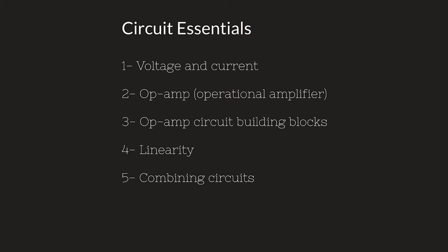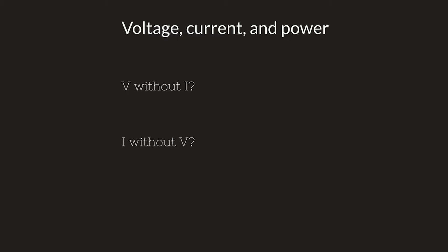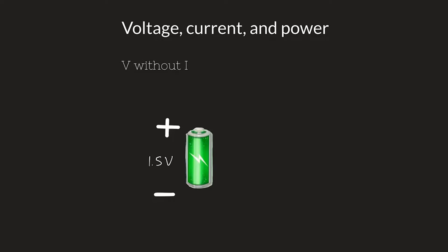First, you have to understand: how can you have a voltage without a current, and how can you have a current without a voltage? Understanding these two things helps clarify the difference between voltage and current. Having a voltage without a current comes into play significantly in op amp functionality. One example: a battery has a voltage difference between its two terminals with no current — ignoring internal fluctuations for ideal considerations throughout this lecture.